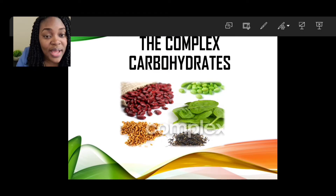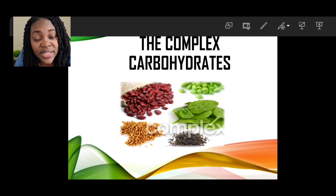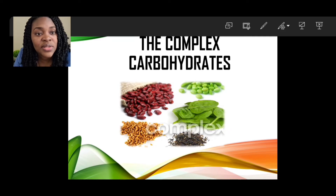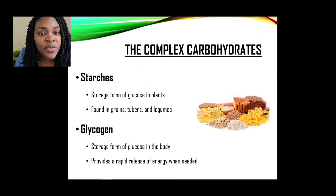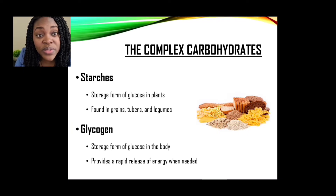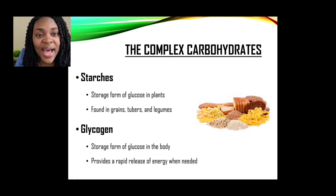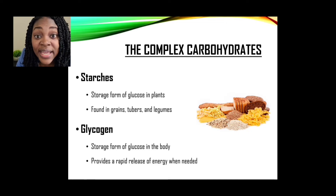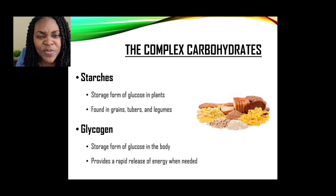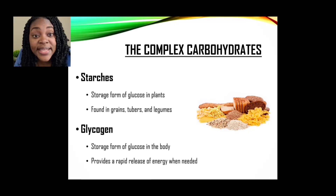Now let us look at the other group — complex carbohydrates. Under simple we had monosaccharides and disaccharides. Under complex, the first subcategory is starches, which are the storage form of glucose in plants. Starch is found in grains like rice, tubers like yam, and also in legumes. Glycogen is the storage form of glucose in the body and provides a rapid release of energy when needed.